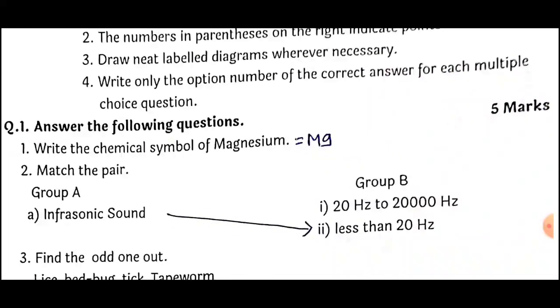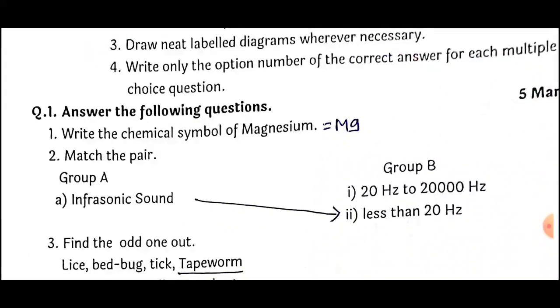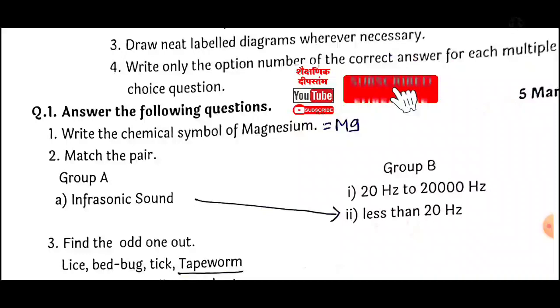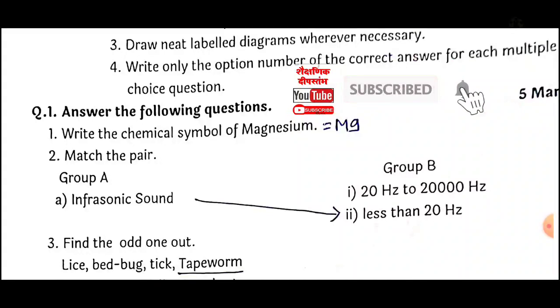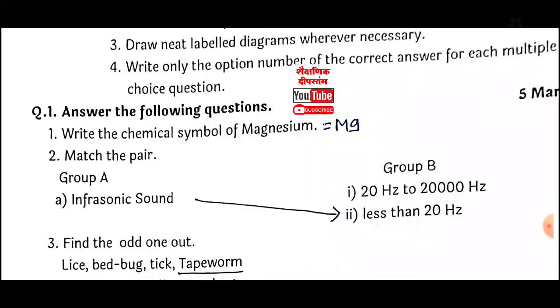Question Number 1: Write the chemical symbol of Magnesium — the answer is Mg. Question Number 2: Match the pair — Group A and Group B. Infrasonic sound — the correct match is less than 20 Hz.